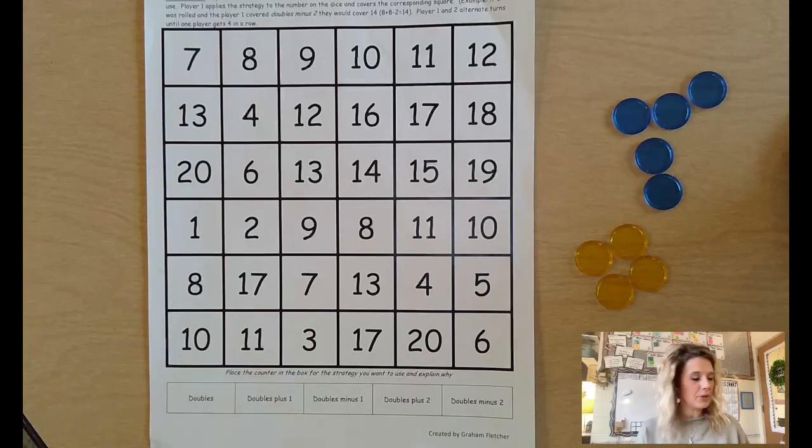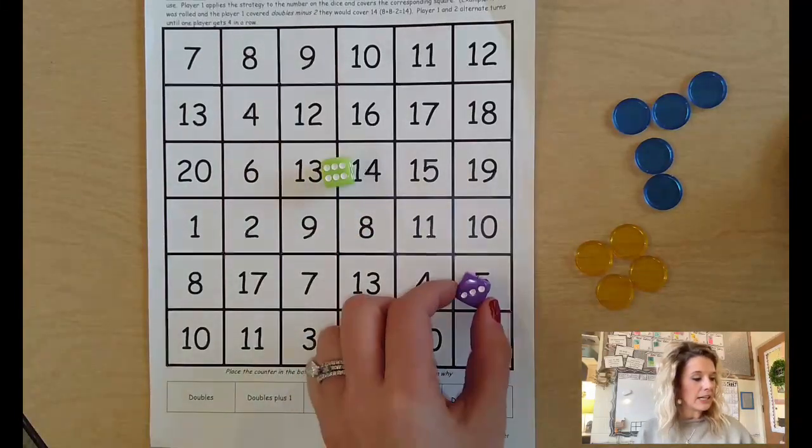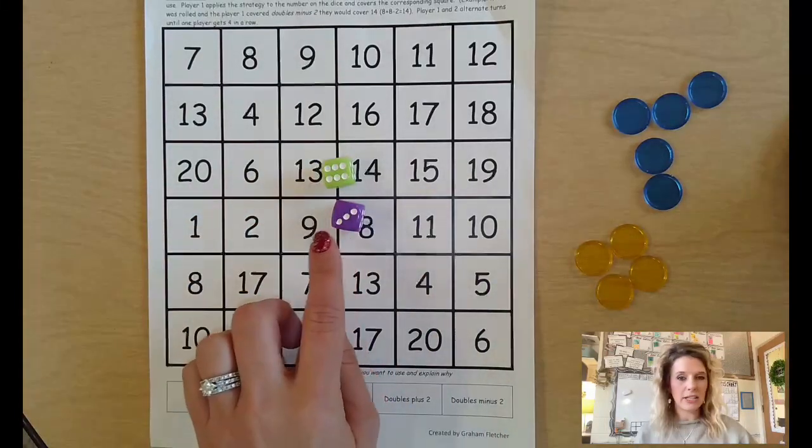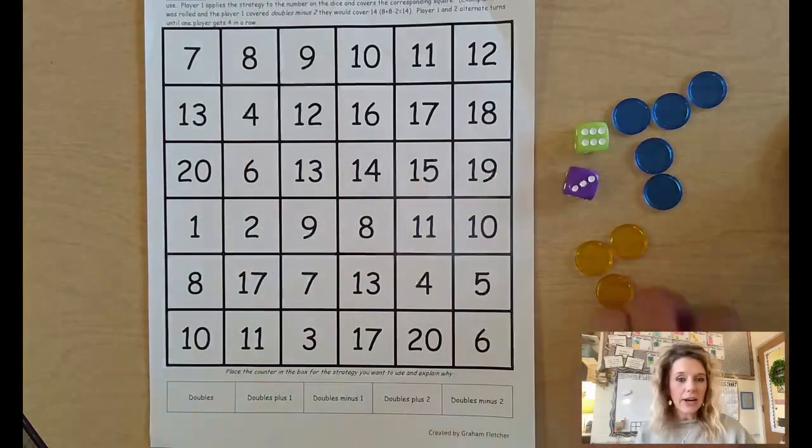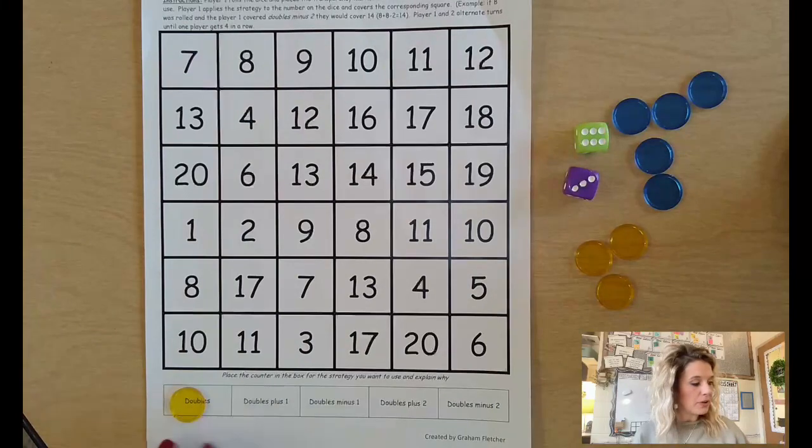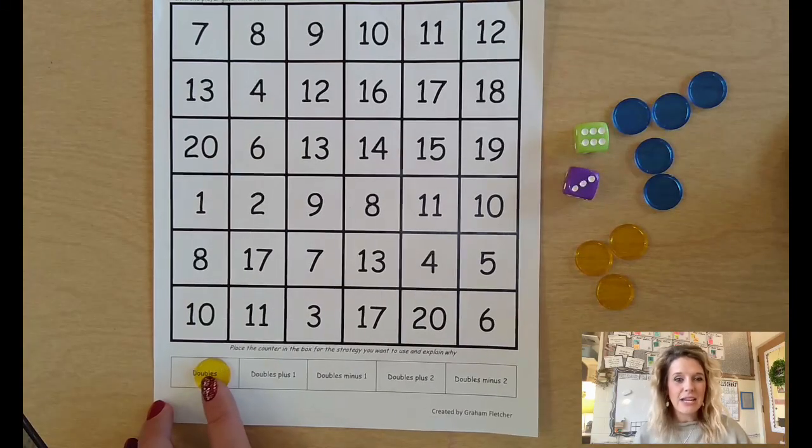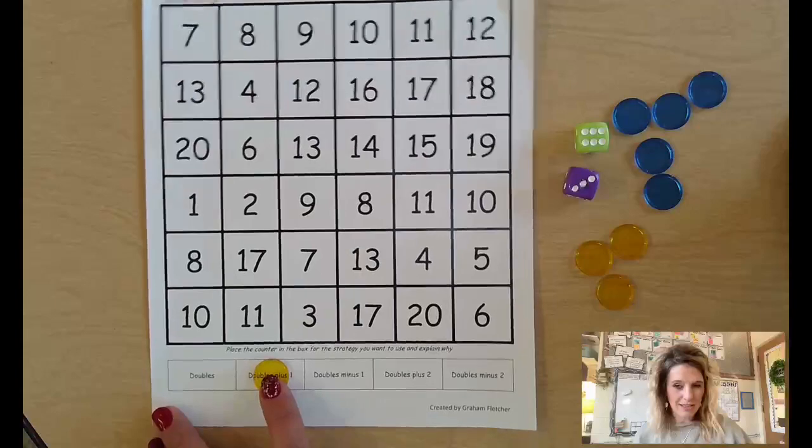So what's going to happen is I'm going to roll these two dice. I got six and three. Six plus three: six, seven, eight, nine. Now I'm going to decide. Well, if I double nine I would have 18. If I doubled plus one, I'd have 19.